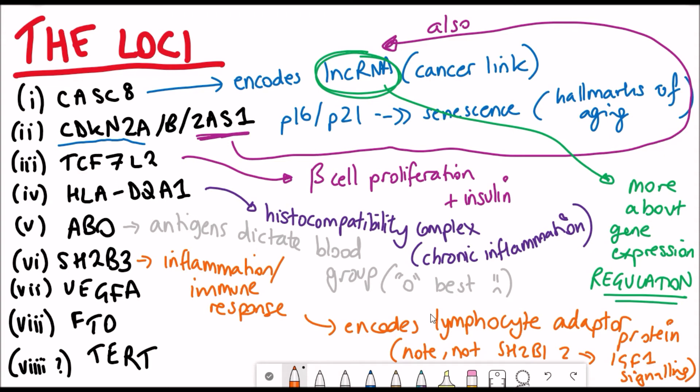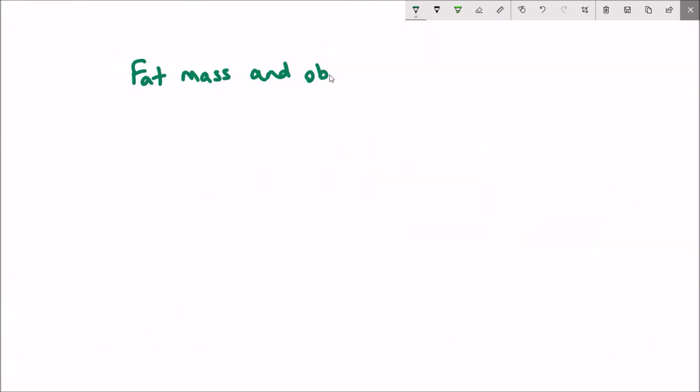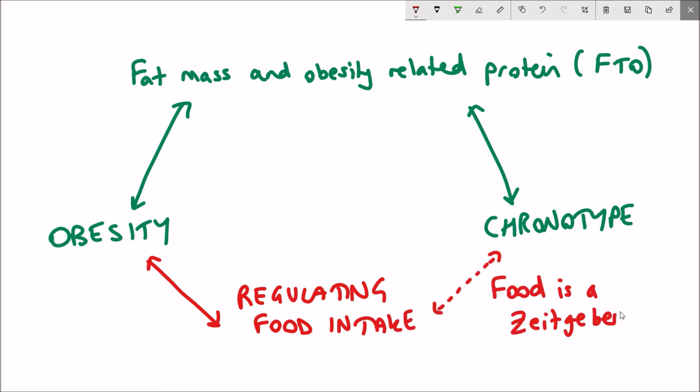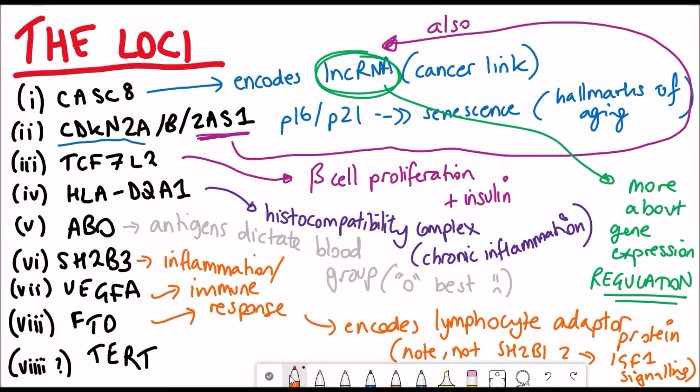Then we have VEGFA, FTO, and they are both also linked with inflammation in the immune response. FTO, I've talked about again in a previous video, it's linked with obesity, and also, well, there's a lot that isn't really fully known about this gene yet. It's a very interesting gene.